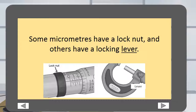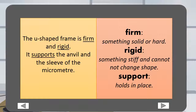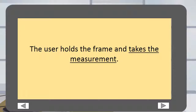Some micrometers have a lock nut and others have a locking lever. The U-shaped frame is firm and rigid. It supports the anvil and sleeve of the micrometer. Firm is something that is solid or hard. Rigid is something stiff and cannot change shape. Support in this case means to hold in place. The user holds the frame and takes the measurement.